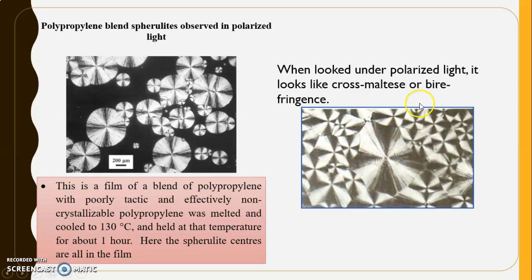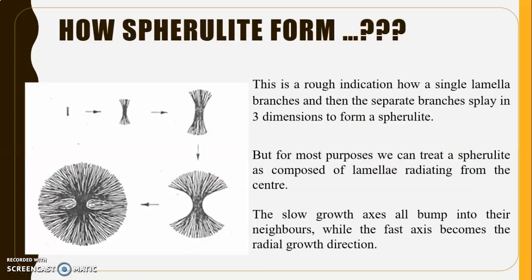When viewed under polarized light, spherulites appear as cross-shaped maltese crosses or birefringent patterns. Regarding how spherulites form: this is a rough indication of how a single lamella branches, and then the separate branches splay in three dimensions to form a spherulite.